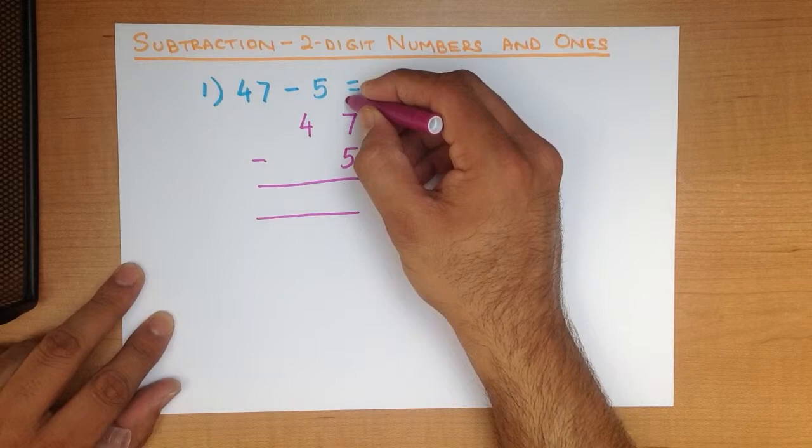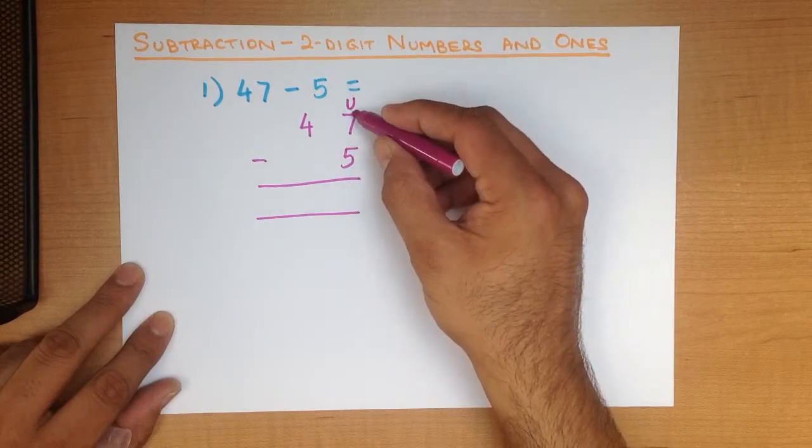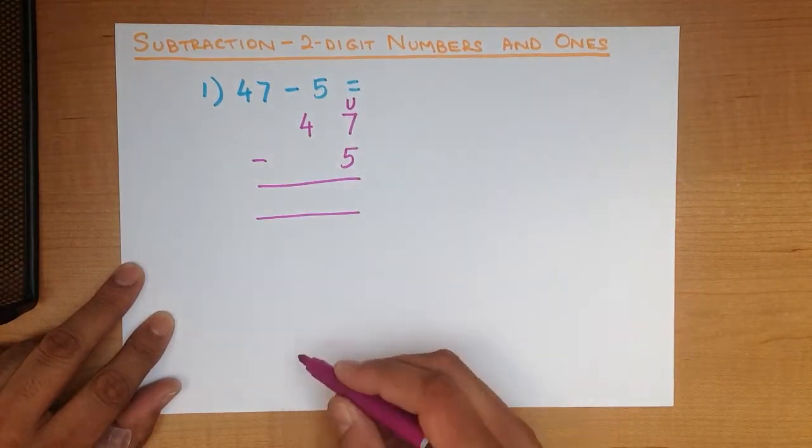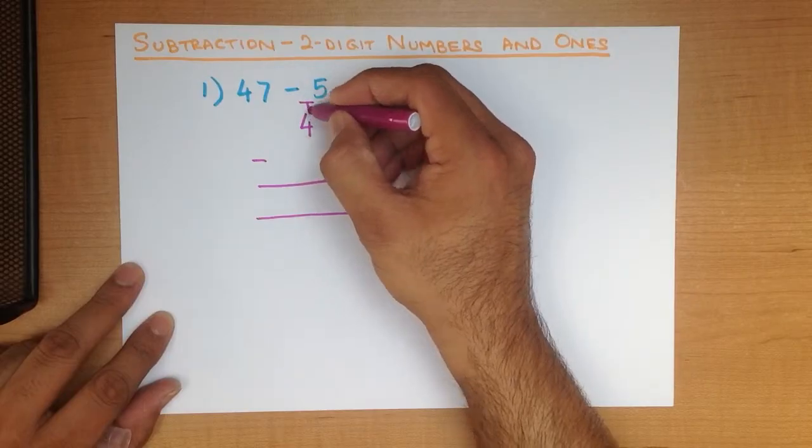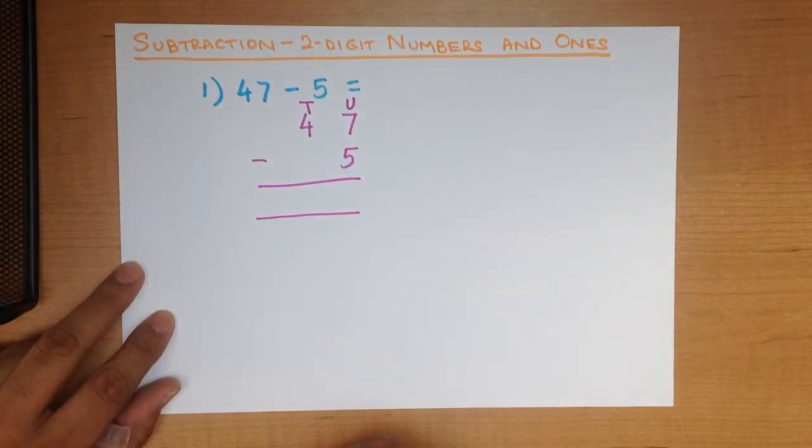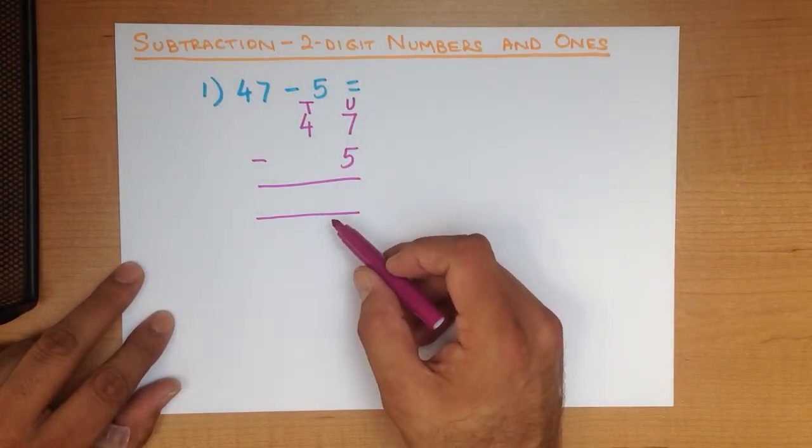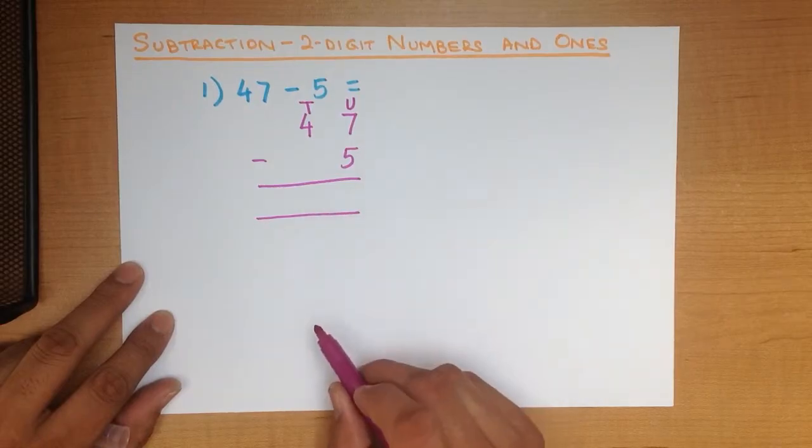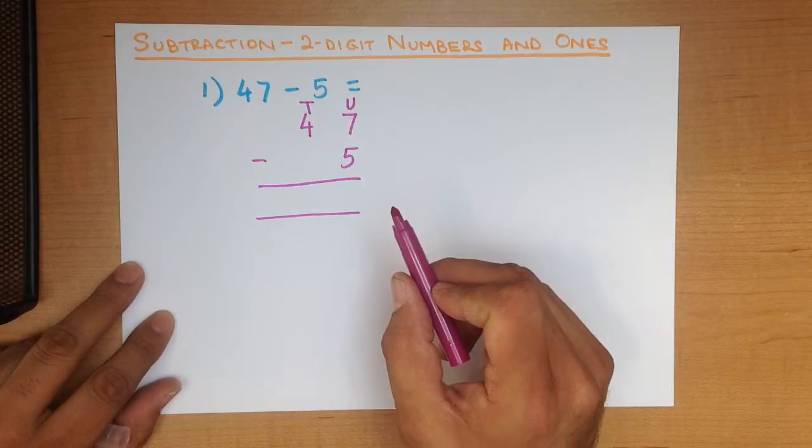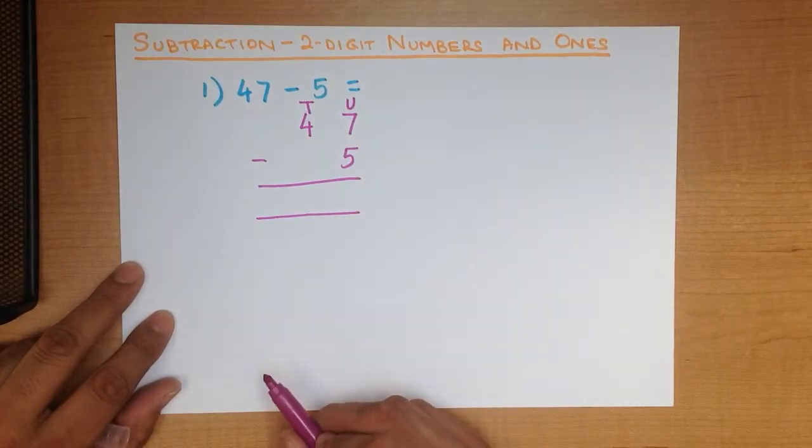We can label the columns. We don't have to, but we can. The column on the right-hand side is units. The one next to it is tens. And when we are subtracting using the vertical format and when we are adding, we start with the column on the right-hand side.